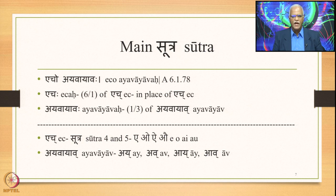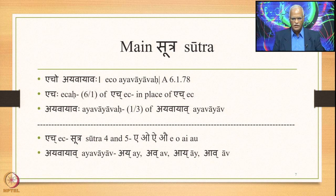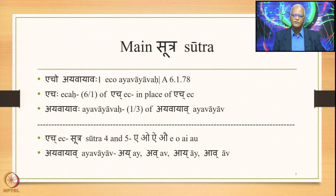H is a Pratyahara formed capturing the sounds in sutras 4 and 5 of the Pratyahara Sutras. These sounds are E, O, Ai, Au — and we have four substitutes: Ay, Av, Aay, and Aav. We have studied several examples illustrating this particular sutra.